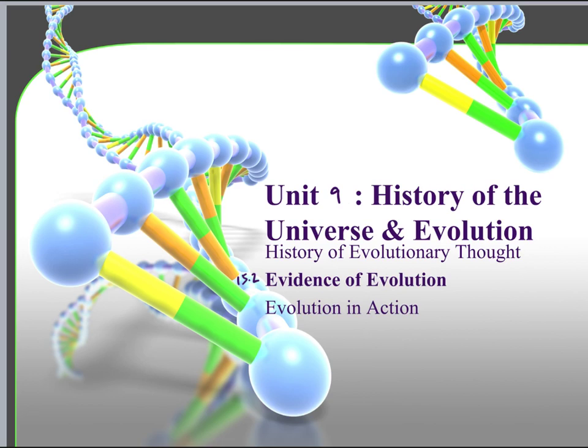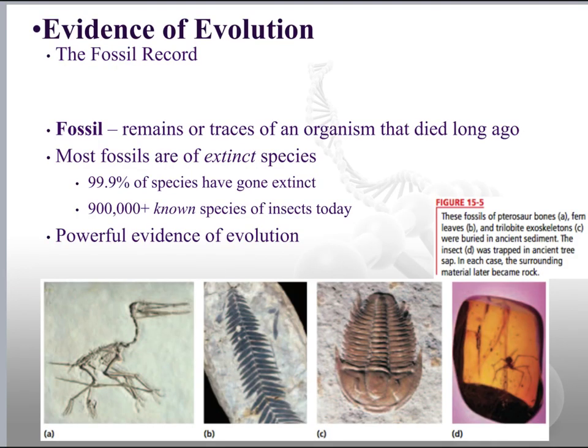This section is going to give us some evidence. Primarily, most of our evidence comes from the fossil record. At least right now, we're working towards more of a genetic piece for evidence. But for right now, a lot of it is fossil, which is the remains or traces of an organism that died long ago.